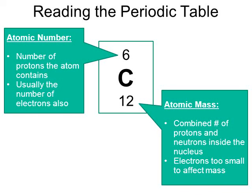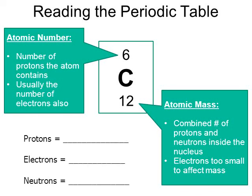So when we look at the protons, neutrons, and electrons of carbon, you can see there are six protons, six electrons, and six neutrons. But let's go through this in a little more detail — they're not always going to be the same number repeated three times. Let's show you how we came up with these numbers.